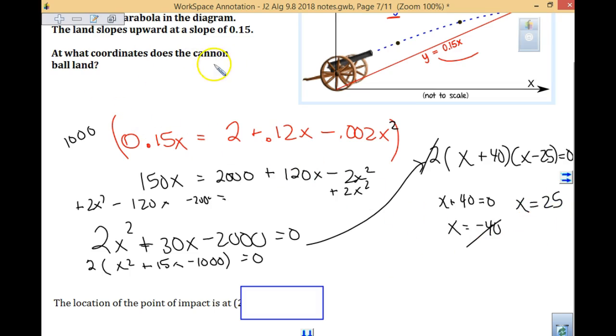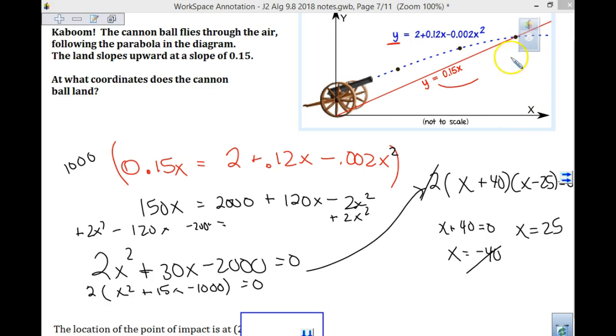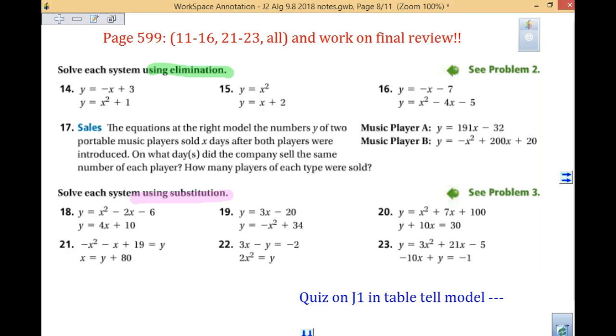It says, what are the coordinates when the cannonball lands? We are trying to find these two together. So we don't just want the x coordinate, we want the x and the y. So we have 25. The easiest one to plug it in is take 0.15 times 25, which equals 3.75. So I have 25 comma 3.75. When you are looking at your homework, I ask you to do elimination and substitution. We are not going to do any graphing because the graphing of the parabola takes quite a bit of time.